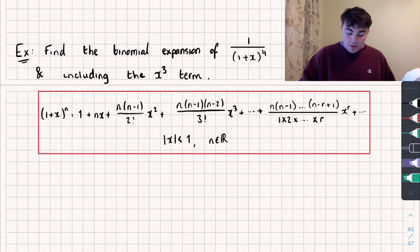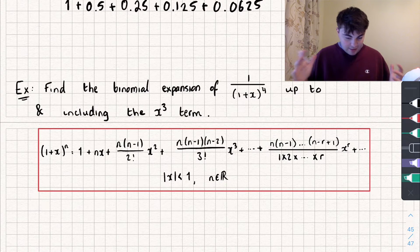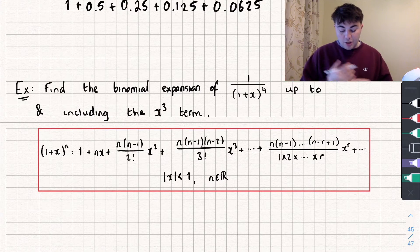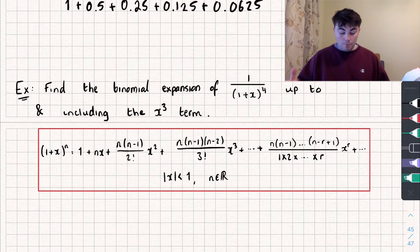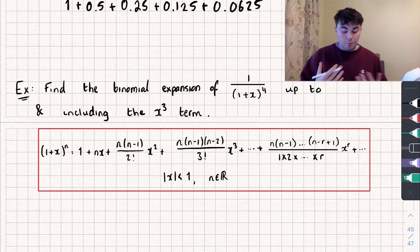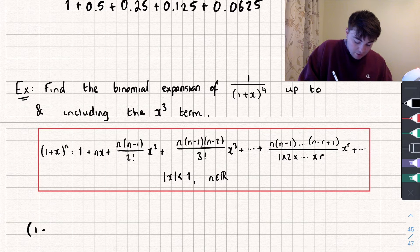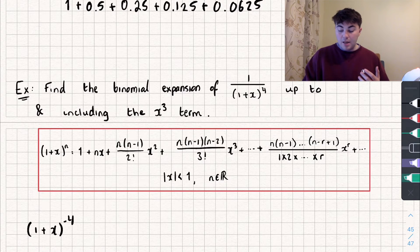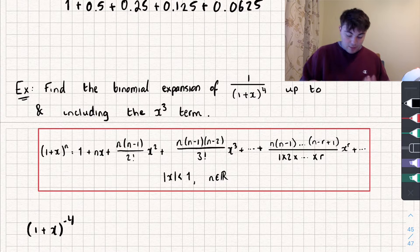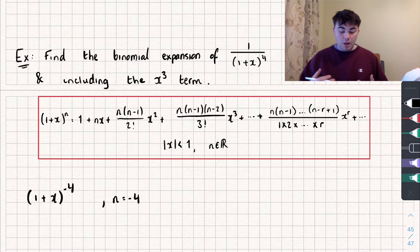Let's take a look at an example. We need to find the binomial expansion of 1 over (1 + x)^4, up to and including the x-cubed term. The formula for the binomial expansion is given in the exam. The first thing I'll do is rewrite 1/(1 + x)^4 as (1 + x)^(−4), because it's the same thing but in a nicer form that looks like what we want. In this example our value of n is −4.